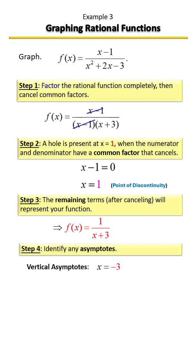The fact that the degree of the bottom is greater than the degree of the top, you're going to have a horizontal asymptote at y equals zero.